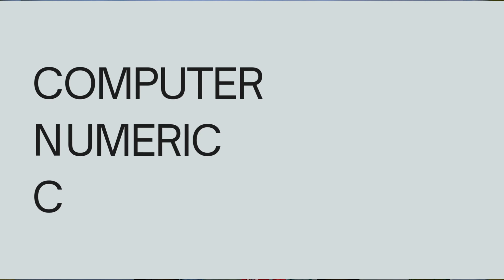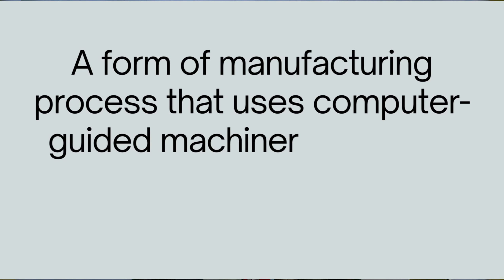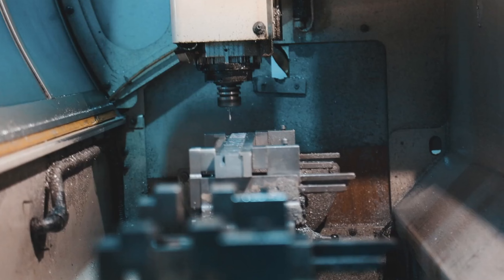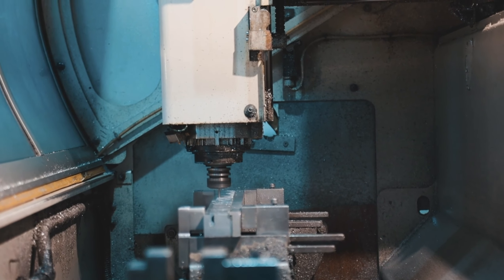CNC stands for Computer Numeric Control. CNC machines are a form of manufacturing process that use computer-guided machinery to shape and cut materials. CNC machining mostly falls under subtractive manufacturing, where we have a material that we're going to create our part from. In the 21st century, CNC machining is used in various industries, and with the help of CNC, companies are able to undergo automation, creating more than one part at a go.